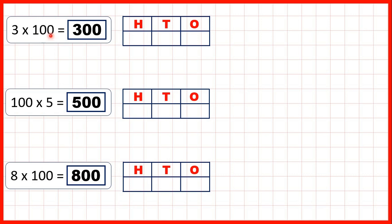So what's really happening when we multiply by 100 is that digits are moving two place values to the left. First we had 3 — three ones — and when we multiply by 100 this 3 moves two place values to the left. But now, to show that it's in our hundreds place value, we need zeros in our tens and ones.